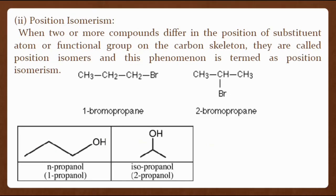The second type of constitutional isomerism is position isomerism. When two or more compounds differ in the position of a substituent atom or functional group on the carbon skeleton, they are called position isomers and this phenomenon is termed position isomerism. For example, there are two structural isomers with the molecular formula C₃H₇Br. In one of them the bromine atom is at the end of the chain, whereas in the other it is attached to the middle. If we made a model, there is no way we could twist one of the molecules to turn it into the other — we would have to break the bromine off of the end and reattach it in the middle, and also move a hydrogen from the middle to the end. Another example is n-propanol or 1-propanol and isopropanol.